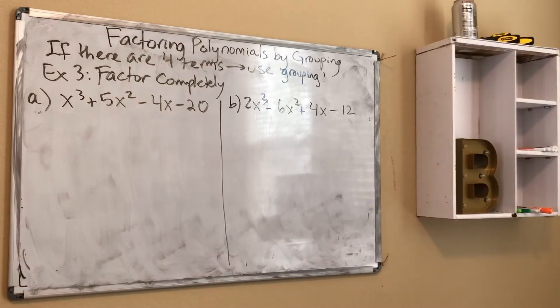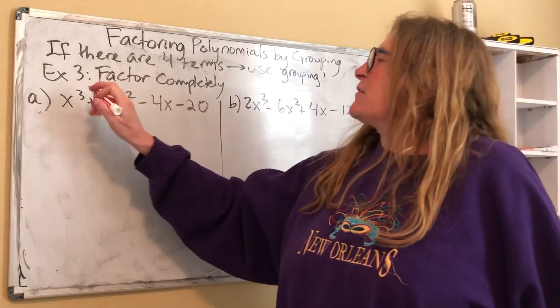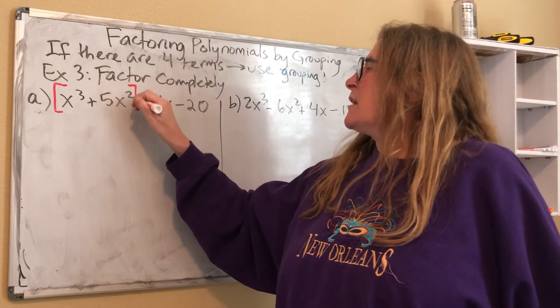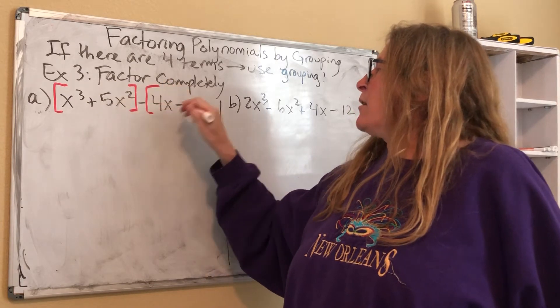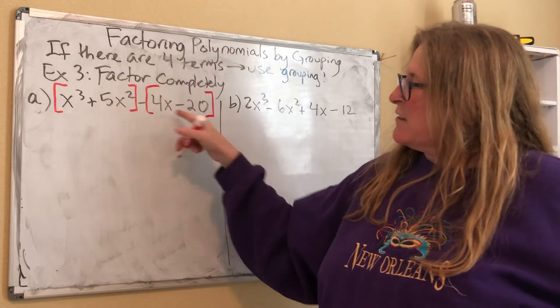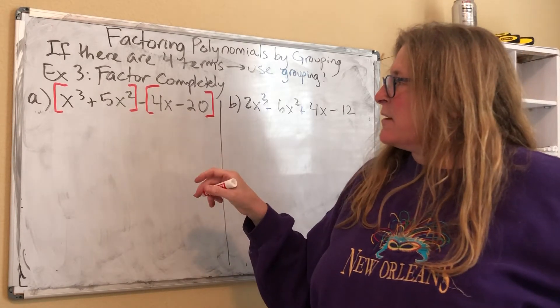So here's what I'm going to do for grouping. I'm going to take the first two terms. Now you guys have done this when you do diamond problems. I'm going to take the first two terms, put a bracket around them, take the second two terms, put a bracket around them.